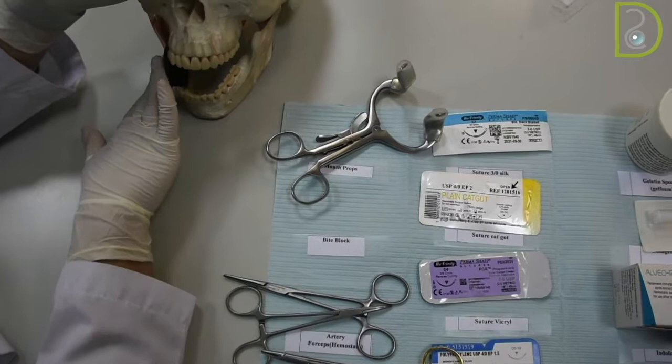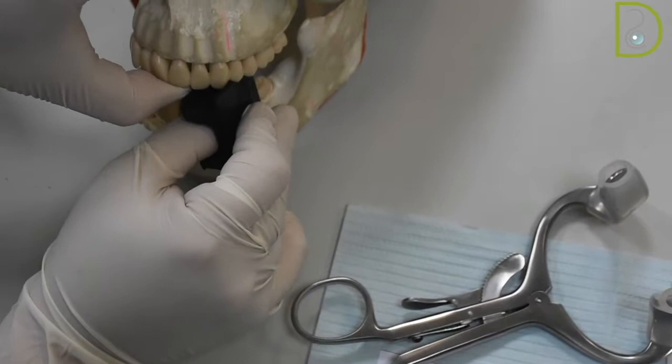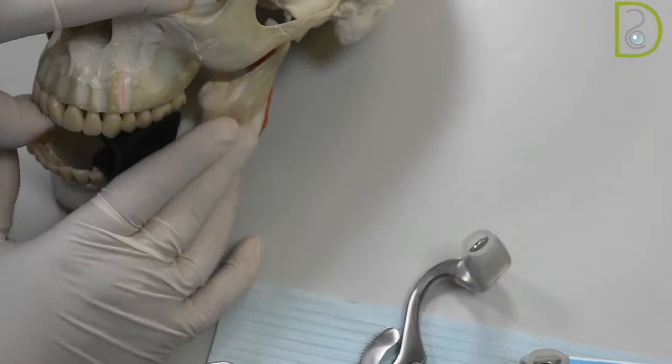If I want it for the left side, then I'm working on the right side, then I will insert the bite block on the left side. The same manner, I will push it towards the posterior teeth and it will hold the jaw for me securely. And that's how the bite block is used.